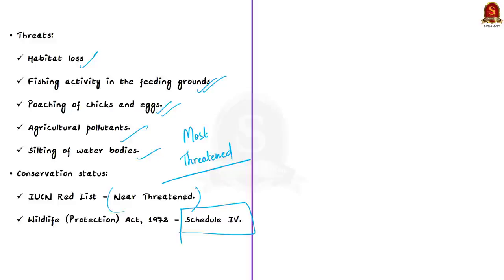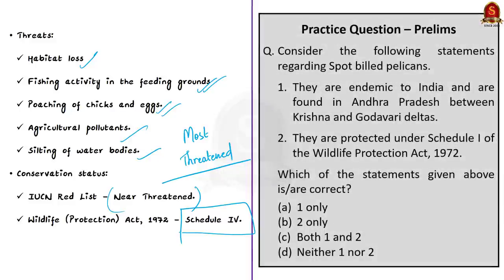Due to these threats, the spot-billed pelican has been provided one of the highest protections. It is one of seven species of pelicans in the world and one of the most threatened. It is listed as Near Threatened on the IUCN Red List, and in India it is protected under Schedule 4 of the Wildlife Protection Act of 1972.